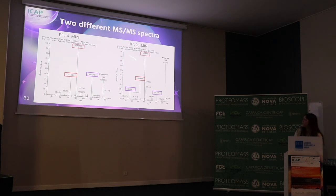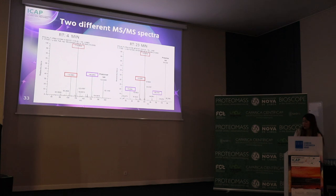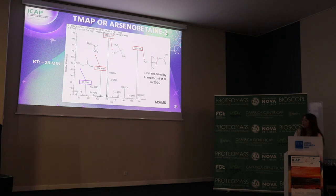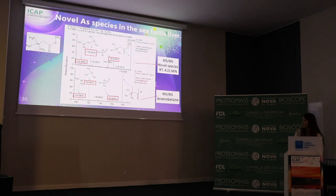We attempted to identify these two different species. We have two different MS2 spectra with the same precursor ion but with different fragments. In red we have some shared fragments but also distinct ones, suggesting these are different species. The species at around 23 minutes was identified as arsenobetaine 2, first reported by Francesconi in 2000, confirmed with MS2 spectra. The species at around 4 minutes has completely different fragments.